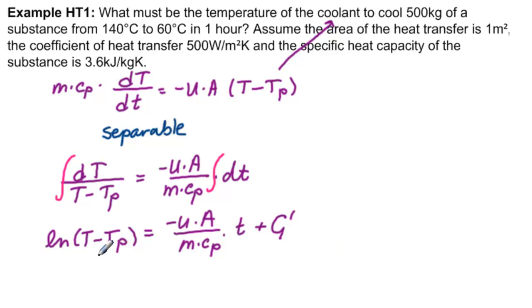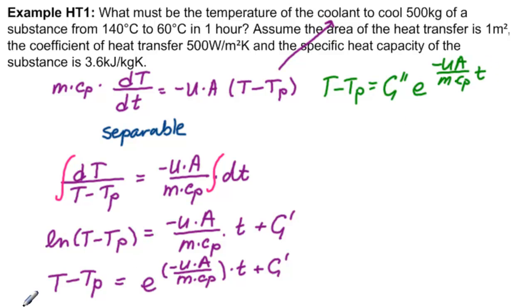Since we're interested in getting to TP, the primary coolant, we would like to get rid of ln. So let's do e to both sides. We get T minus TP equals e to the minus U times A over M times CP times t plus C prime. E to this times e to that, so e to the C prime part we'll write C double prime. So our general solution is T minus TP equals C double prime times e to the minus UA over MCP times t.